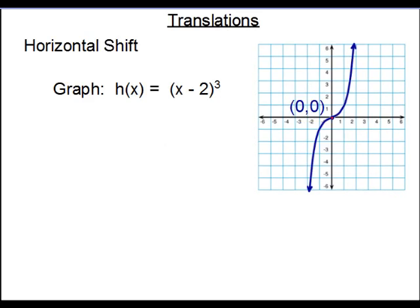Similar phenomenon for horizontal shifts. You'll notice though that there's no value outside for horizontal - it'll be grouped together with the x variable. To figure out how far across you're moving, you have to take that group, set it to 0, and solve for x. In that case, we get positive 2.